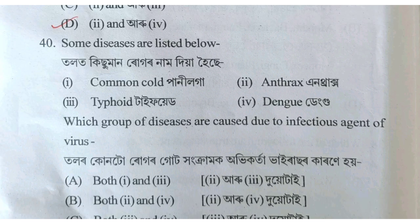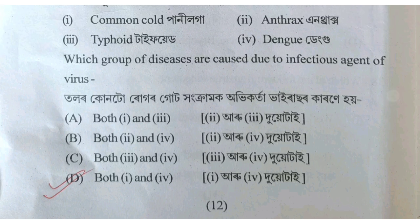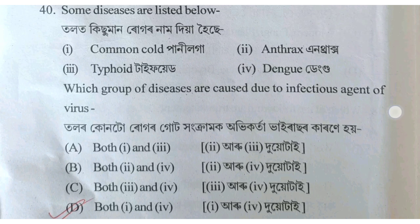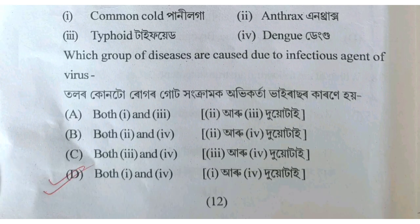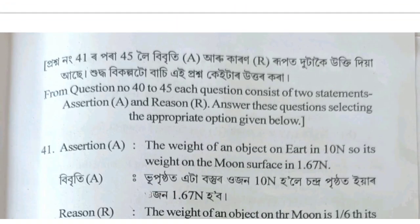Anthrax, typhoid, and dengue — which are caused by viruses? Option D: typhoid and dengue are caused by viruses, while anthrax is bacterial.